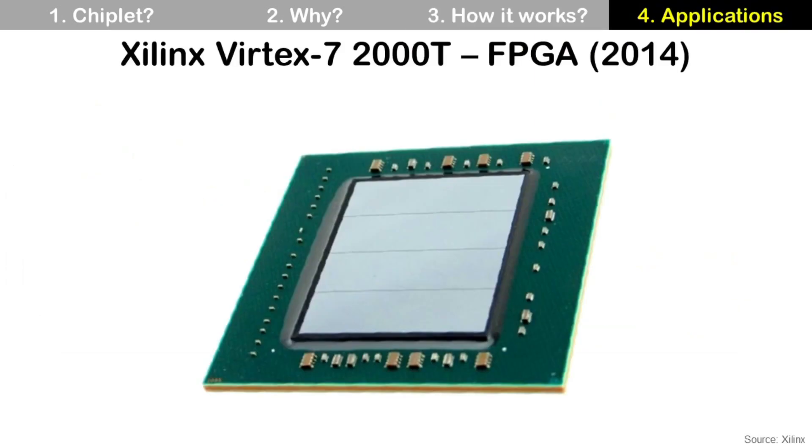Back in 2014, FPGA company Xilinx made Vertex 7 2000T, and it used four smaller Chiplet dies larger than one large FPGA die.